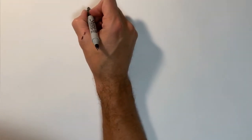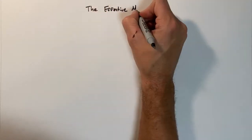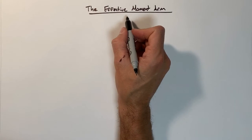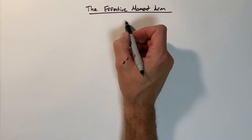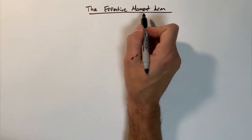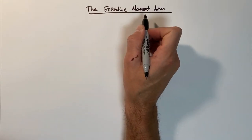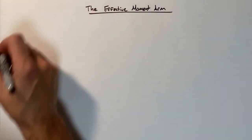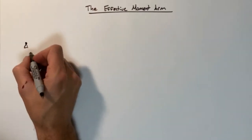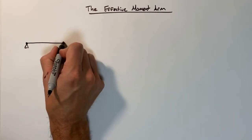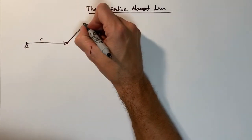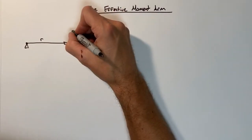Today we're talking about the effective moment arm. This isn't a particular problem, it's just sort of a shortcut that helps us save a little bit of time when going through and solving trusses. Really what this gets at is torque and how we calculate torque. If we look at a simple situation where we have a pin, a radius vector extending out from that pin, and a force acting on the end of that radius,